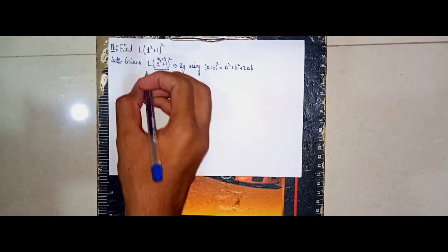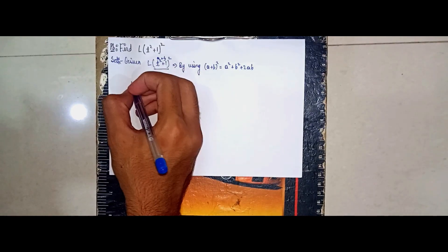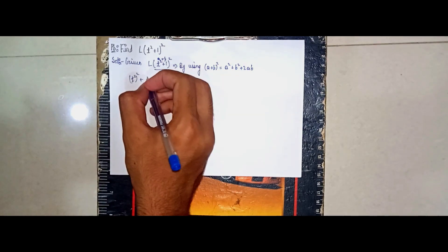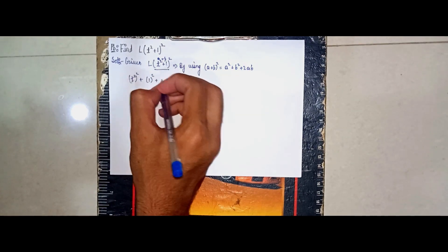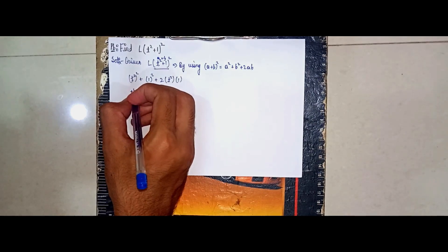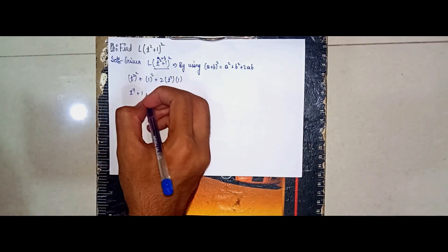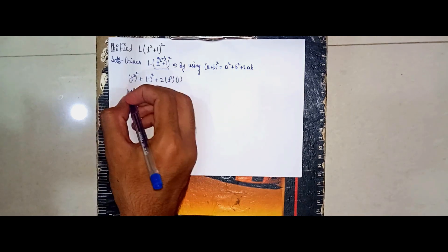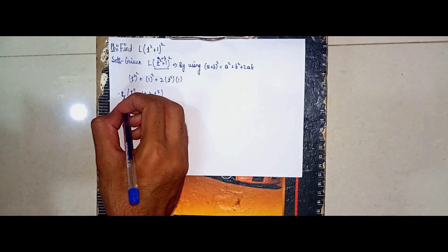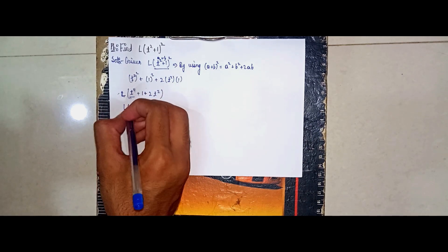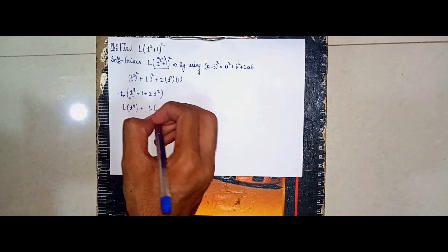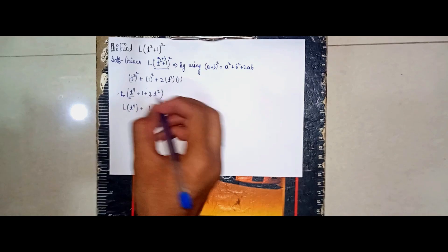Here a is t² and b is 1, so a² is (t²)², which is t⁴, plus b² is 1² = 1, plus 2ab = 2·t²·1. So it becomes t⁴ + 1 + 2t². Now apply the Laplace to each term.